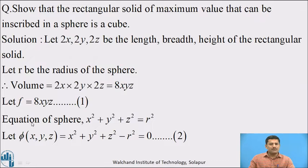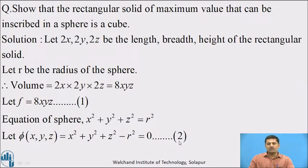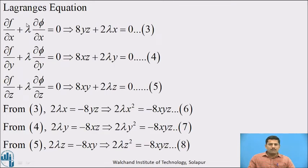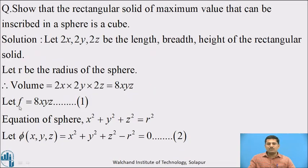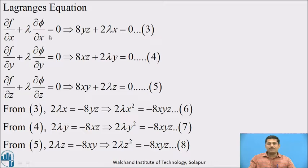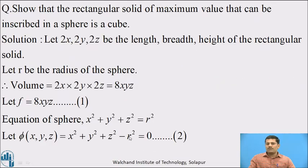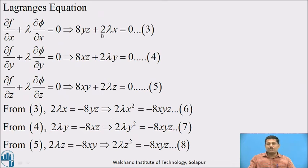The subjected condition is a sphere. The sphere centered at origin has the equation x² + y² + z² = R². Let us denote it as phi(x, y, z) = x² + y² + z² − R² = 0. Call it equation number 2. Here F and phi are functions in three independent variables, so we have three Lagrange's equations. The partial derivative of F with respect to x, treating y and z constant, is 8yz, plus lambda times the partial derivative of phi with respect to x, which is 2x, giving 8yz + 2λx = 0. Call it equation number 3.